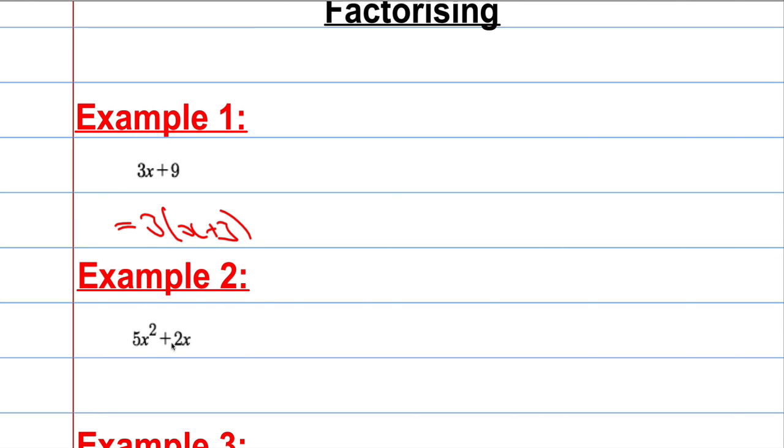Moving on, second example, we've got 5x squared plus 2x. What's common to both terms? I can factor out an x and that will leave me with 5x plus 2.